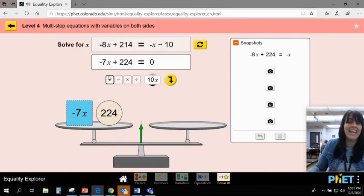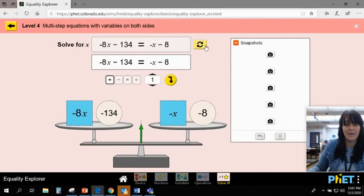Last but not least, on level 4 you are going to get your two-step variables on both sides, and it'll walk you through all of these different pieces.